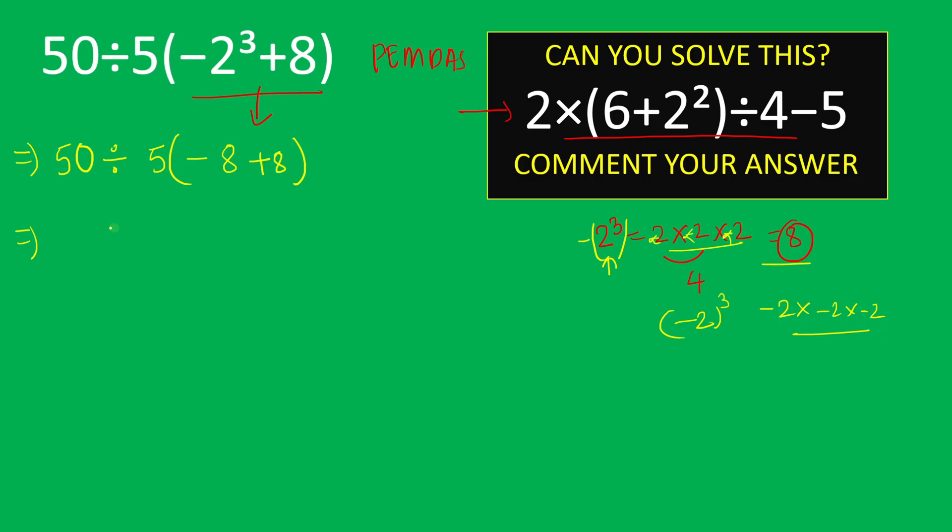And here as we can see, -8 plus 8 equals 0. So we have 50 divided by 5 times 0. First we will do the division: 50 divided by 5, which equals 10. Then 10 times 0, and the final answer is 0.